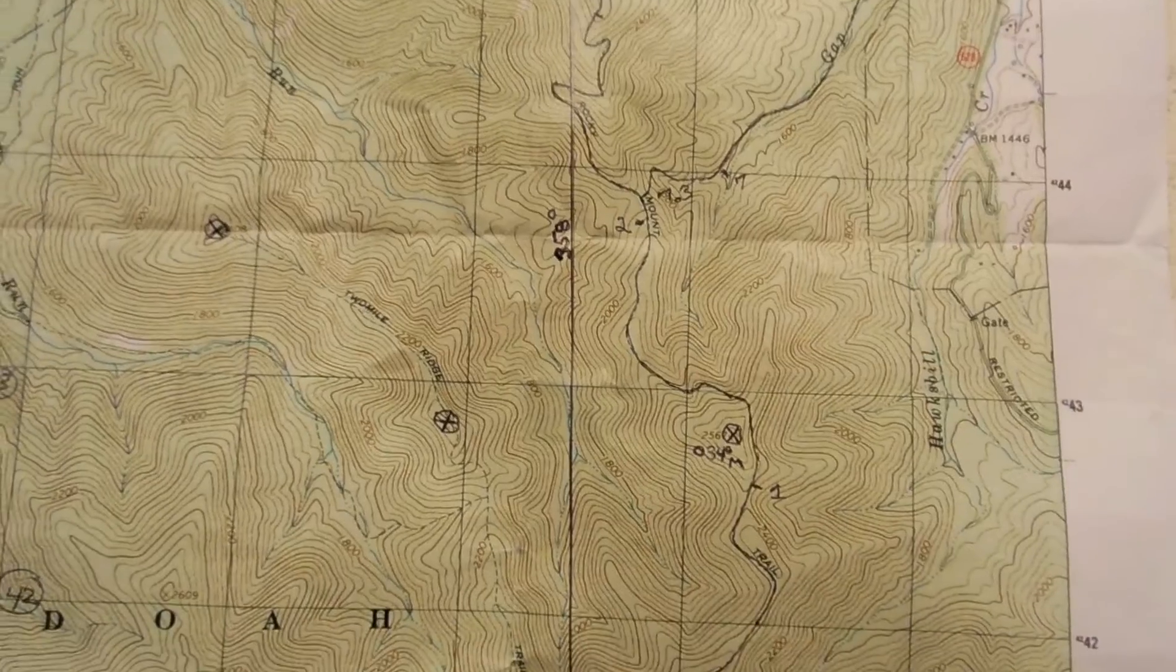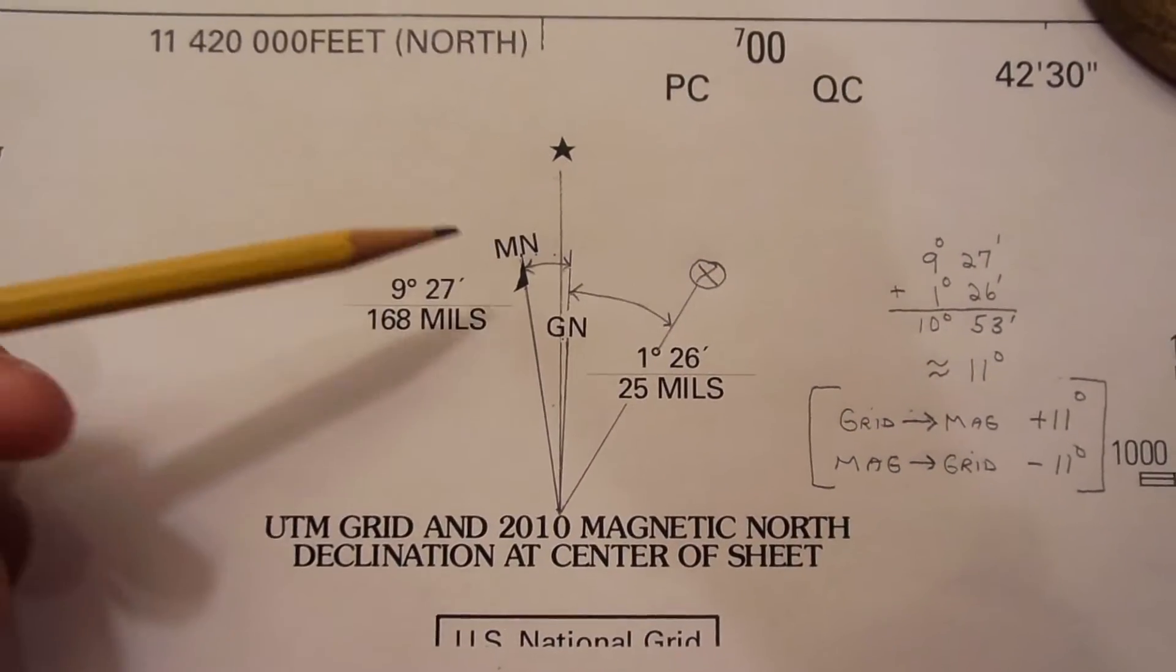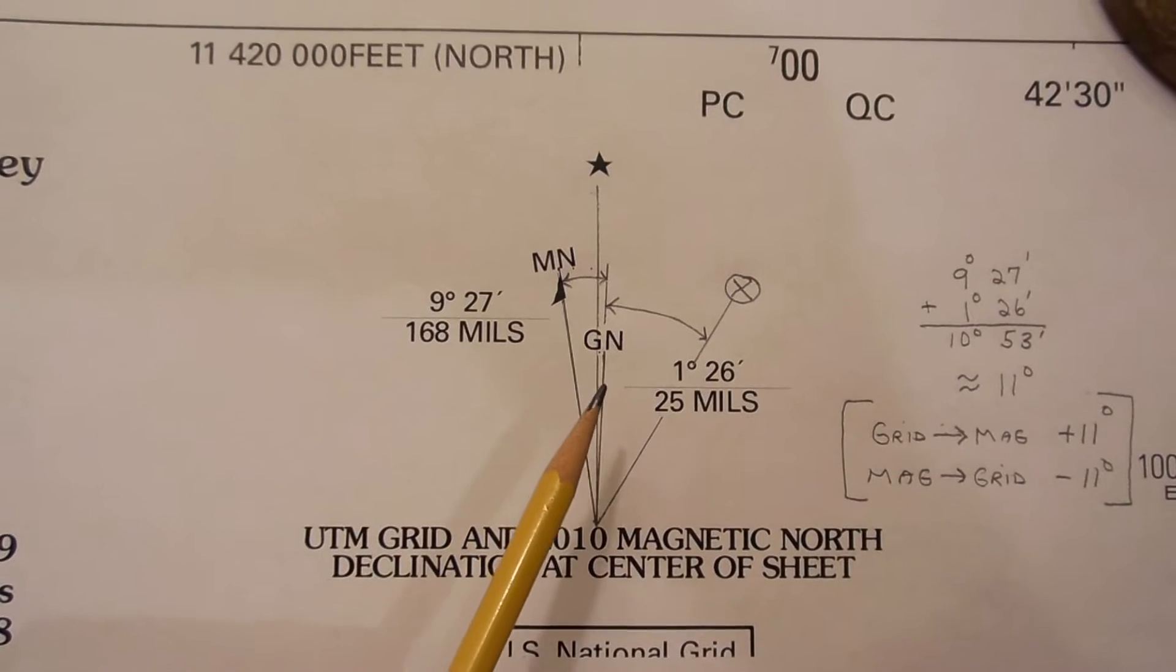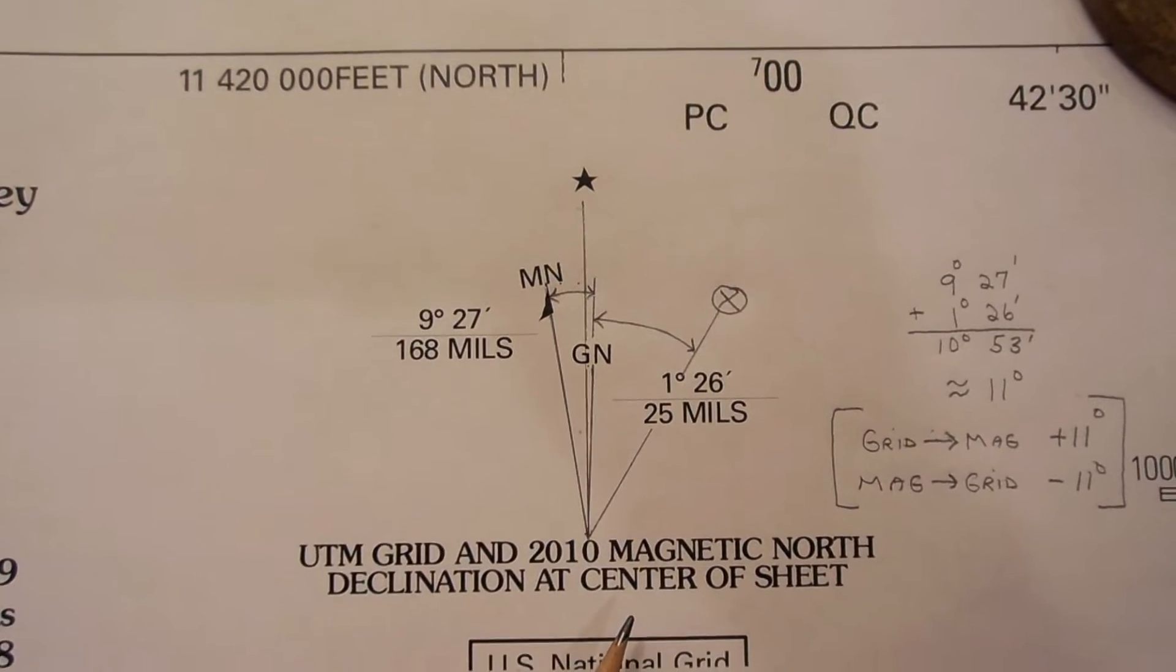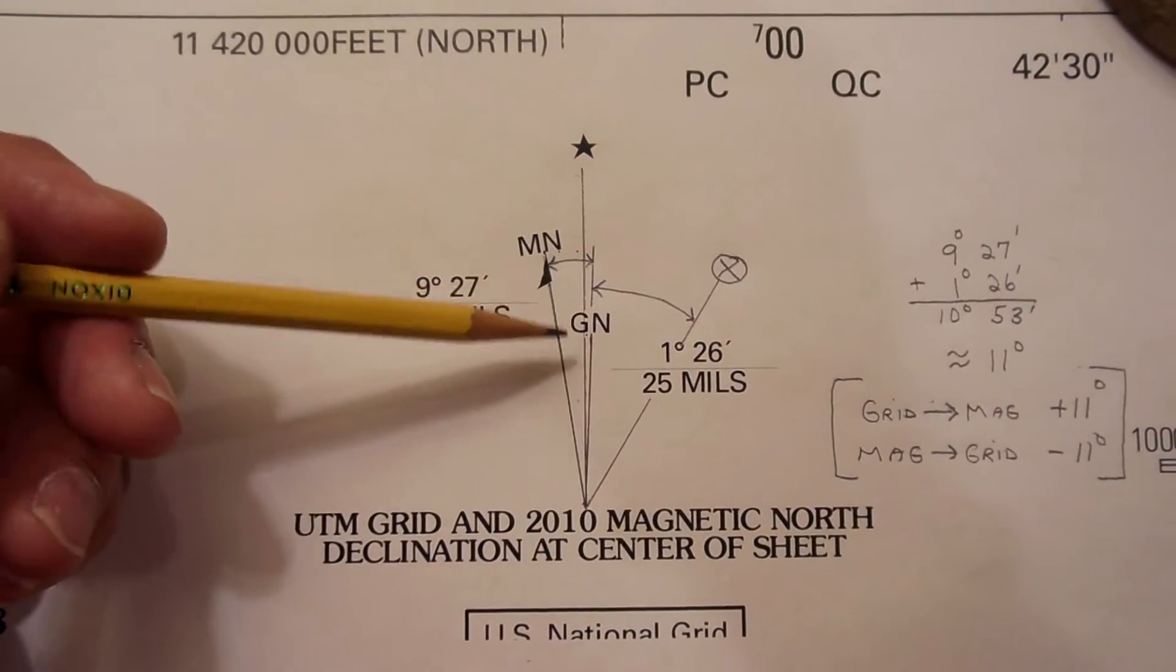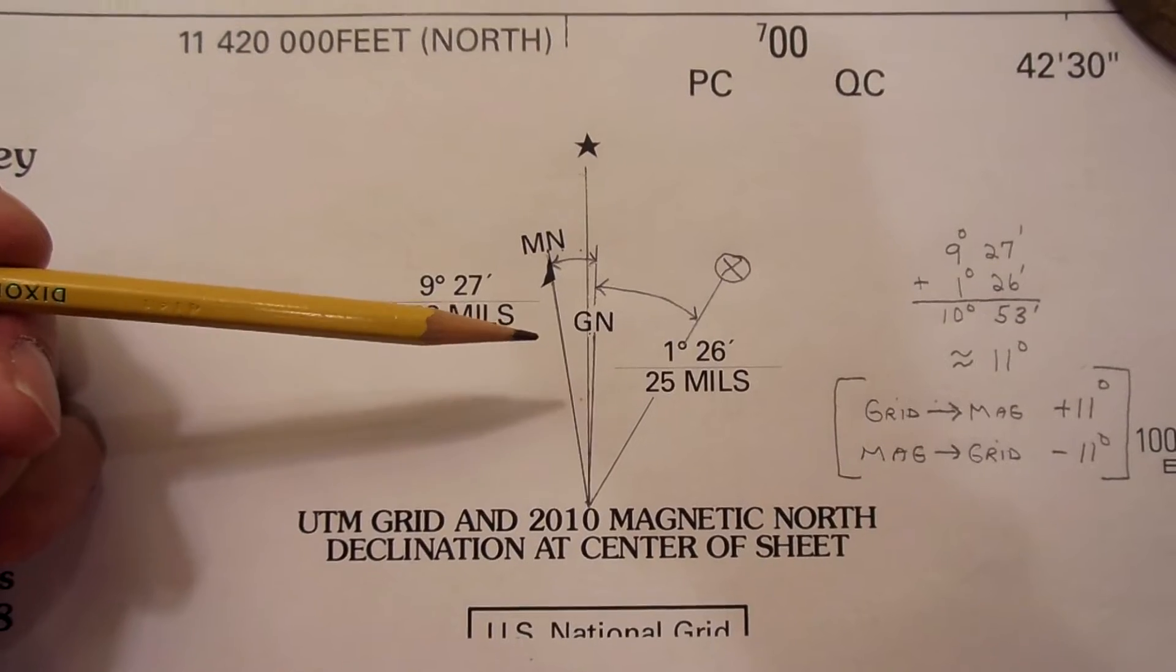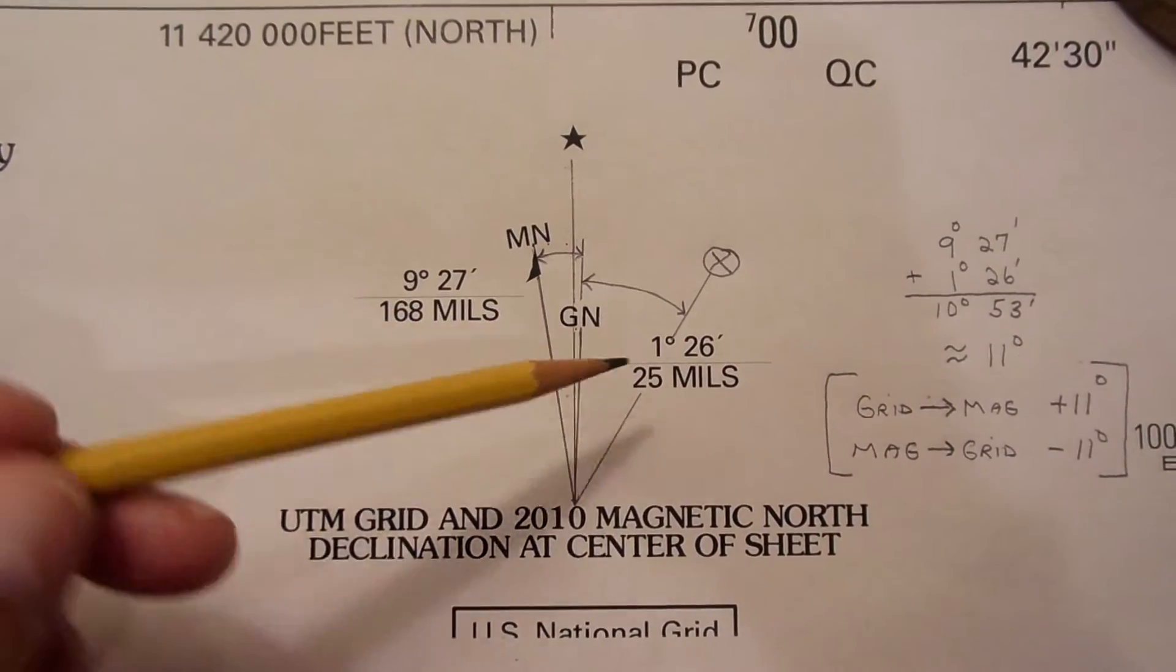These vertical lines are grid north. Now what does that mean? Well, when you have a paper map, you've actually got three norths that you have to be knowledgeable about. In the lower left-hand corner of each map, you'll find this diagram.